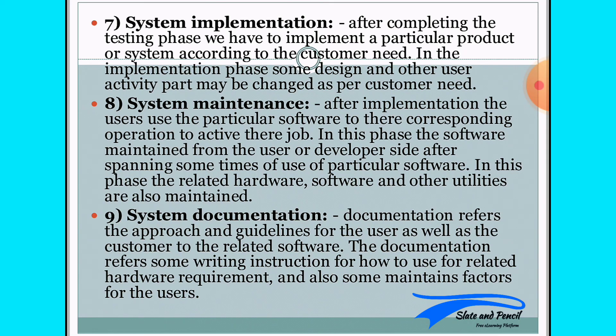The changes in the system and maintenance in the system — documentation refers to the approach and guidelines for the user as well as the customer for the related software. This documentation includes written instructions on how to use the software, related hardware requirements, and maintenance factors for the users. Documentation is a written document.